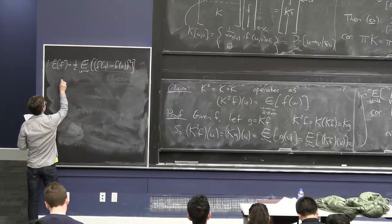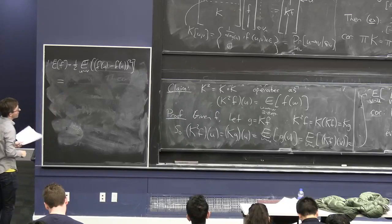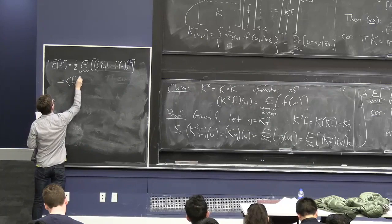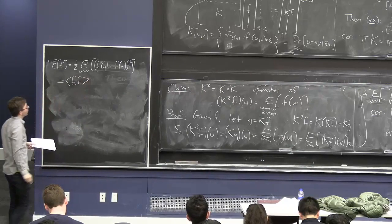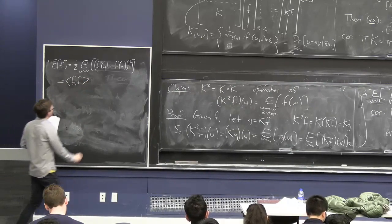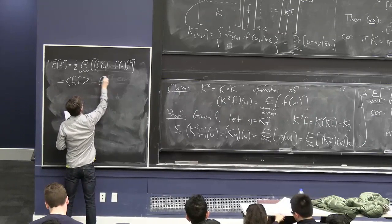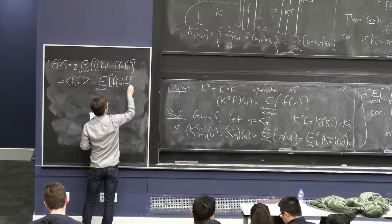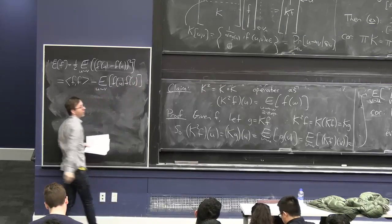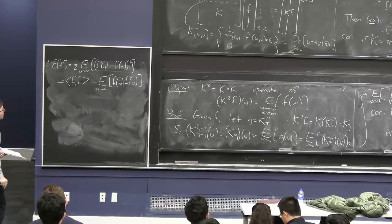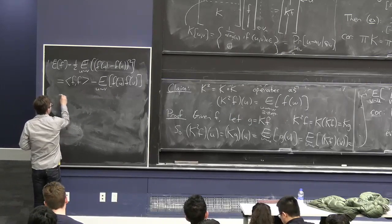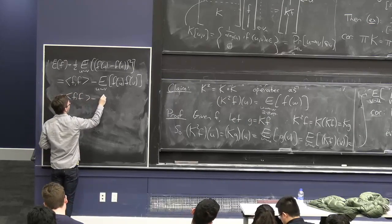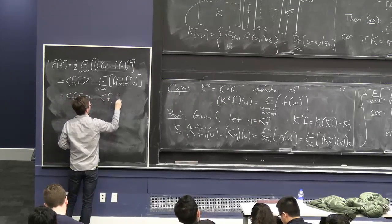One of the first things I wrote on the board today was that after a tiny bit of calculation, you see that this is the same as the 2-norm of f squared, or f's inner product with itself, minus the expected value on a random edge uv of f(u)·f(v). That's how we got started on the definition of K. As we've now finally seen, this is the same thing as f inner product f minus f inner product Kf.